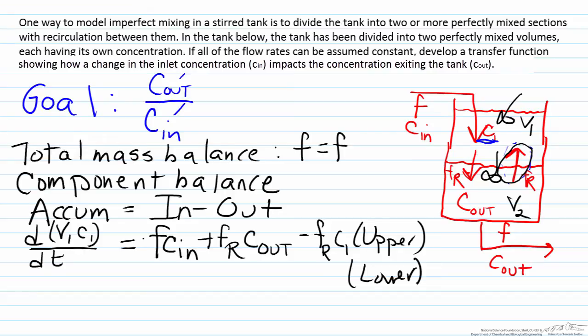A similar balance ensues for the lower tank. Here we have one stream coming in, that's the one from the upper portion, F_R C_1. We have two streams exiting: one going to the upper portion, minus F_R times C_out, minus the stream exiting the tank which is F times C_out. The amount of material in the lower portion can be described as its volume V_2 multiplied by its concentration C_out.